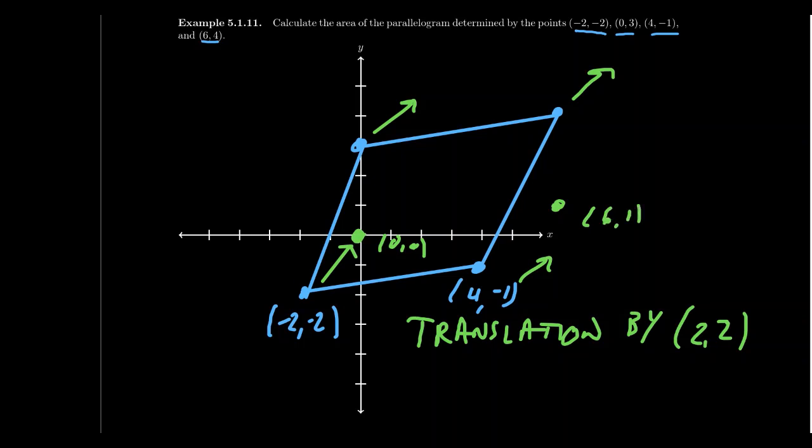If we do 0, 3, that's this one right here, 0, 3. When you translate that one, that becomes 2, 5, which is this point right here, 2, 5. And then lastly, if we take the point 6, 4, which is right there, when we translate that, that'll become the point 8, 6.